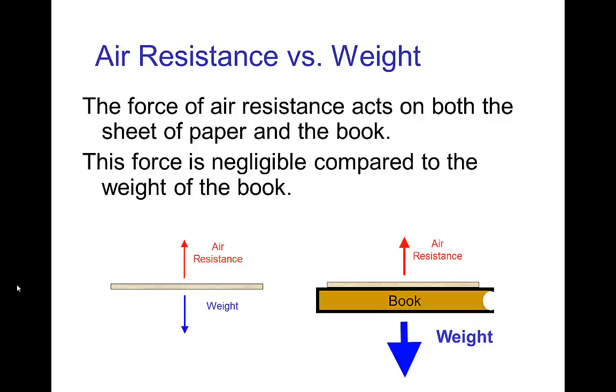But maybe a better way of thinking of it is that the paper and the book are falling as one object. And there's so much weight of the book that the force of gravity, the weight, is much larger than the air resistance that's acting on the book. And so it falls rather quickly compared to just the piece of paper by itself.